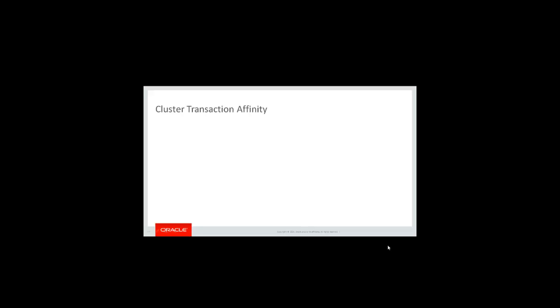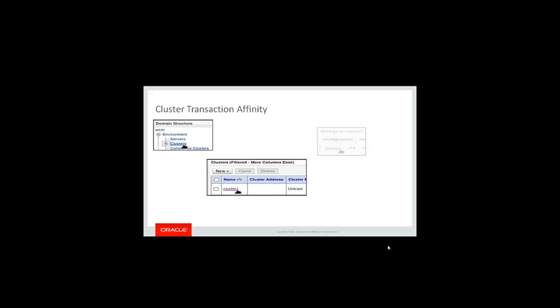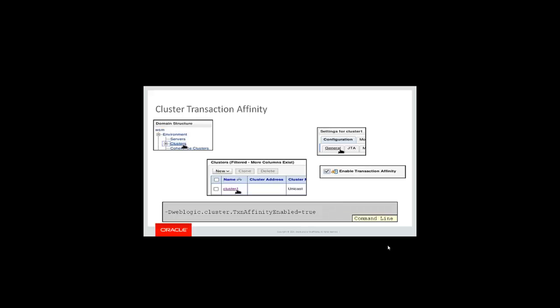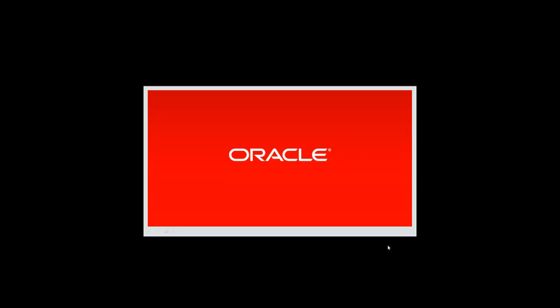How do you configure it? Under Clusters, choose your cluster, go to the General tab, and enable transaction affinity. Or you can use the command line: weblogic cluster transaction affinity enabled equals true. This is the end of the presentation. Thank you very much.